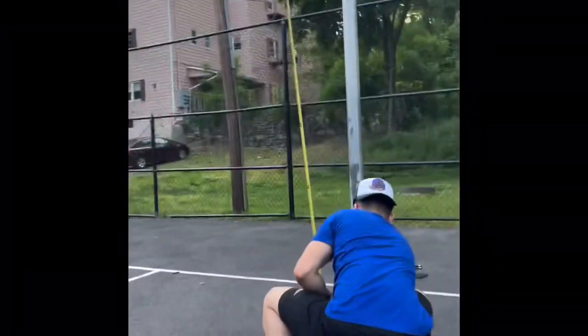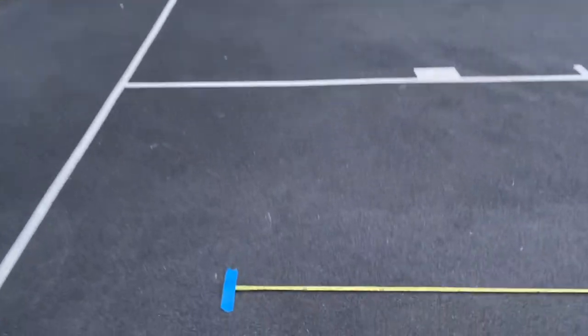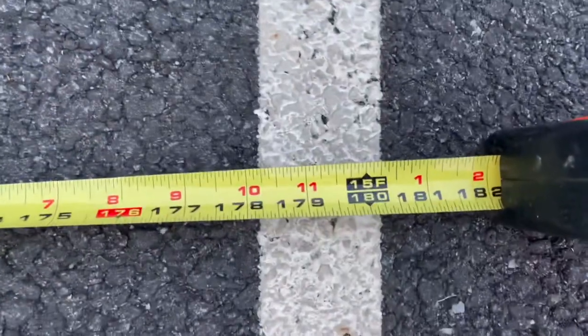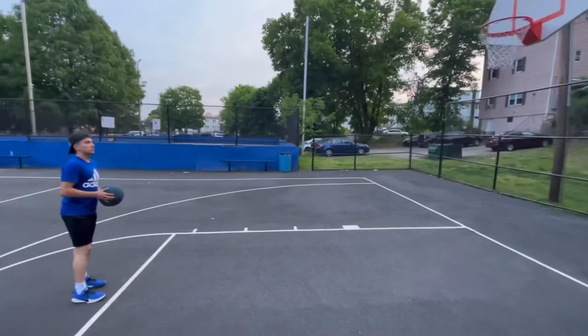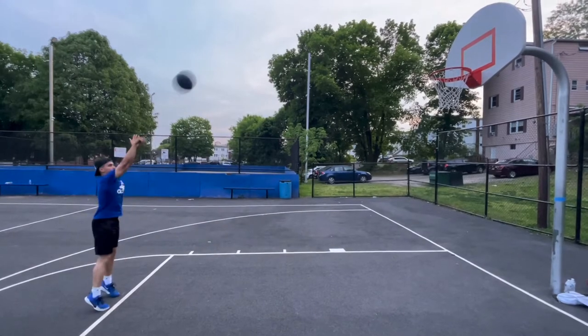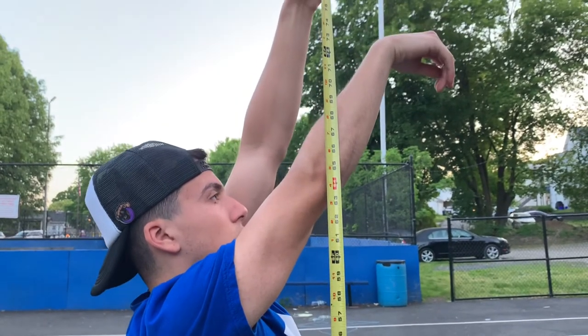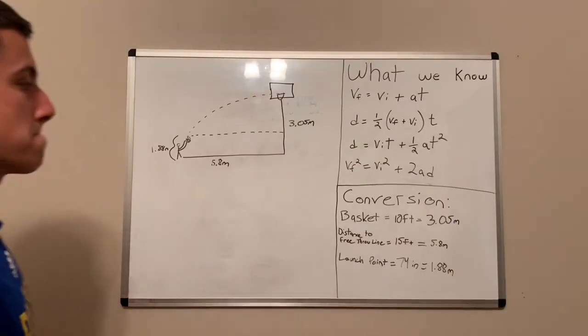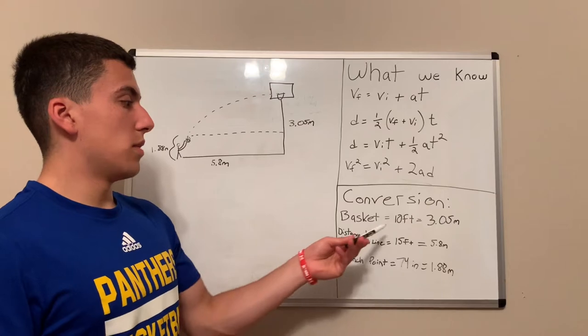I measured the height of the basket, which came out to around 10 feet. After measuring the basket, I then measured the distance from the bottom of the backboard to the free throw line, which was around 15 feet. After shooting the free throw, I measured my release point, which was around 74 inches. Now that we have all our measurements, I converted them into the metric system.